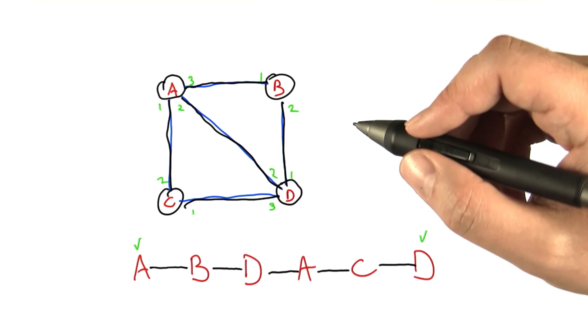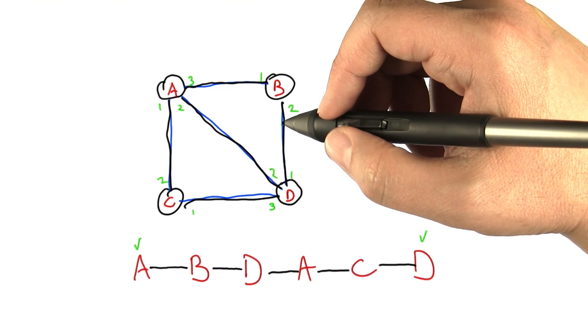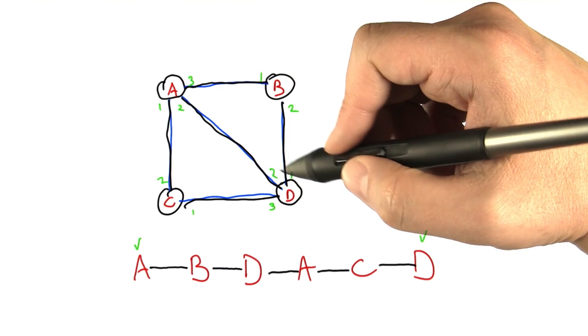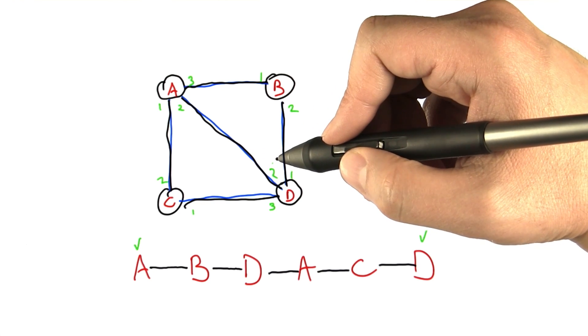And it turns out that this relationship is an if and only if. That is to say, if a graph is connected and has exactly two odd degree nodes, then it has an Eulerian path, and if it's not, then it doesn't.